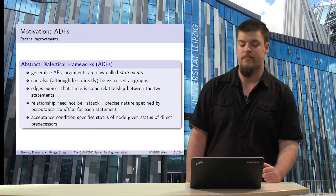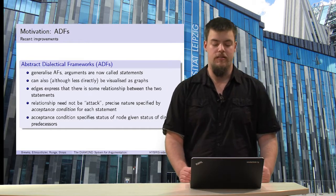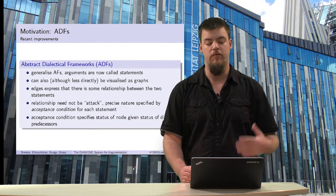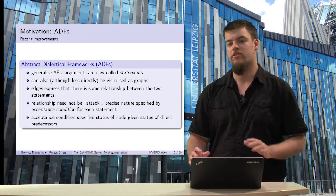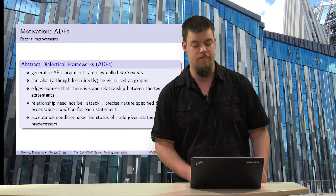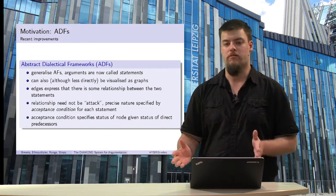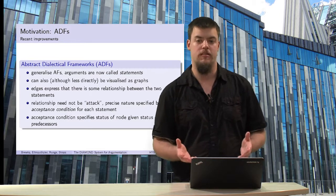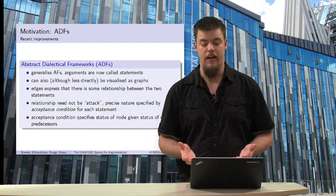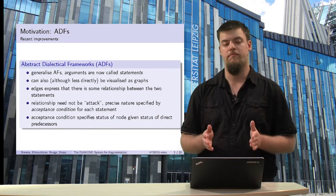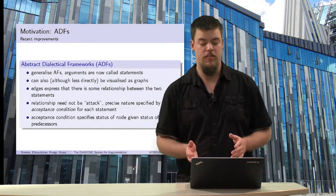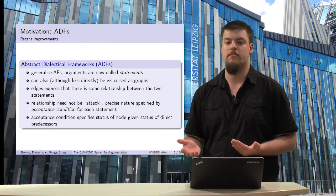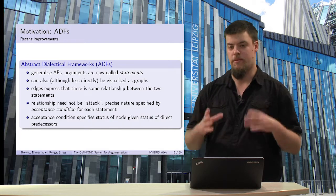One change in abstract dialectical frameworks is that the arguments are now called statements. In general, it is also possible to still visualize the framework with a graph, but it's not as direct as for Dung's argumentation framework. The edges between statements just denote that there is some kind of relationship, and how that relationship looks is specified by the so-called acceptance condition, which specifies the status of one statement based on the status of its direct predecessor statements.